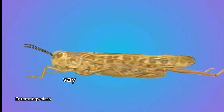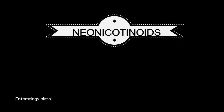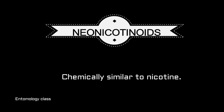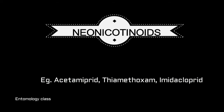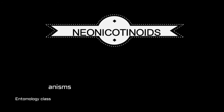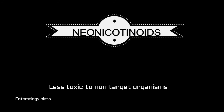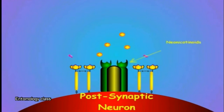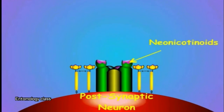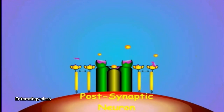Let us examine our next insecticide group, that is neonicotinoids. Neonicotinoids are a class of neuroactive insecticides chemically similar to nicotine. Imidacloprid is the most widely used insecticide in the world, which comes under the neonicotinoid group. Other examples are acetamiprid and thiamethoxam. Compared to the organophosphate and carbamate insecticides, neonicotinoids cause less toxicity in birds and mammals than in insects. Neonicotinoids fill up the natural acetylcholine receptors by binding with them, and by this way the neonicotinoids mimic acetylcholine. The receptors will not be available for the normal natural acetylcholine in the body of the insect.